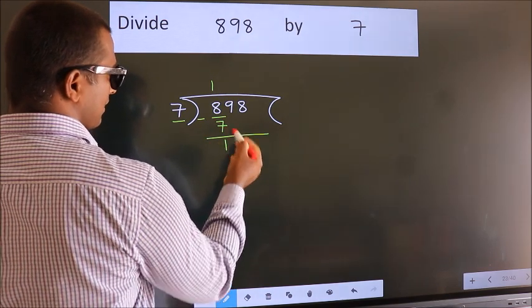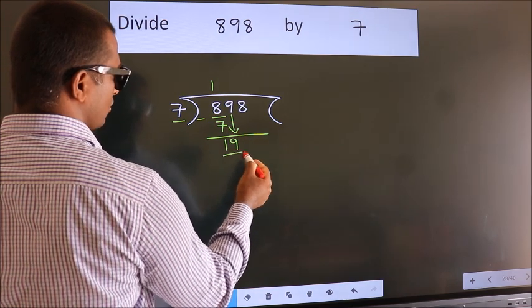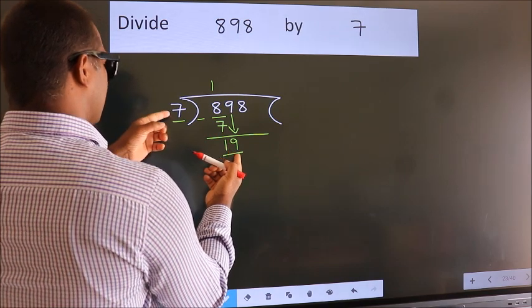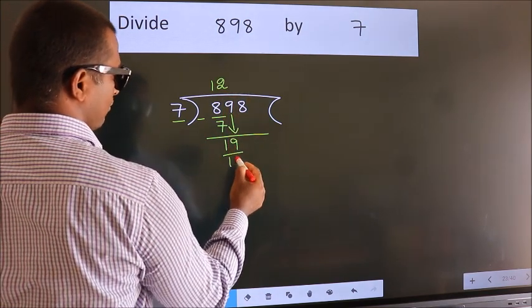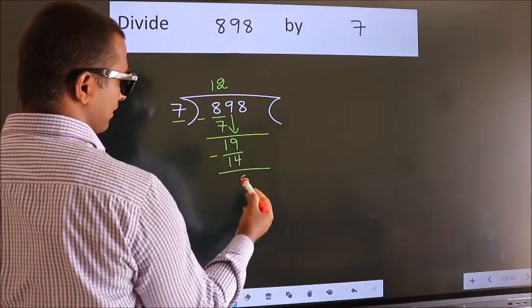After this, bring down the beside number. So 9 down. So 19. A number close to 19 in 7 table is 7 twos 14. Now we subtract. We get 5.